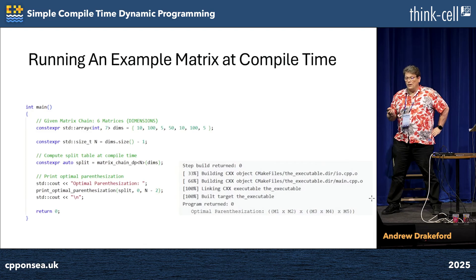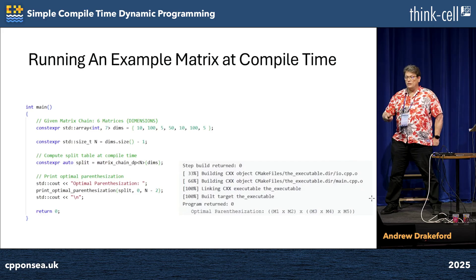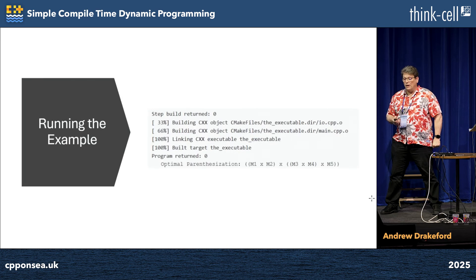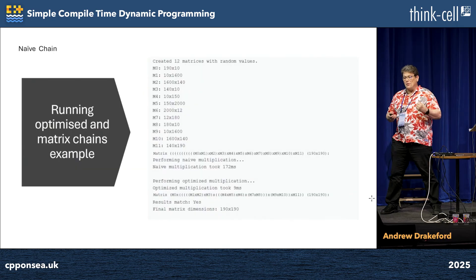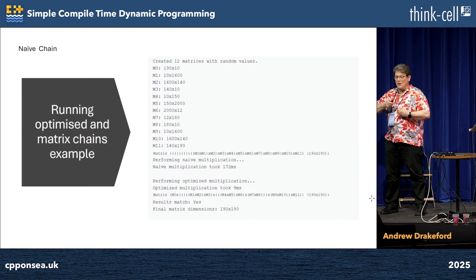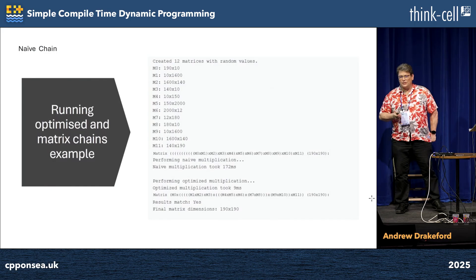To do this function live, we declare a constexpr auto split, evaluated at compile time, initialized by calling matrix_chain_dp. There's the output for the simple example and it's got a Godbolt link. A better example of seeing if it actually works is to run it on a chain of 12 matrices, run the naive matrix multiplication and time that at 172 milliseconds, and finally run the optimised version in the new optimal sequence in only 9 milliseconds. So you can do compile-time optimisation simply.